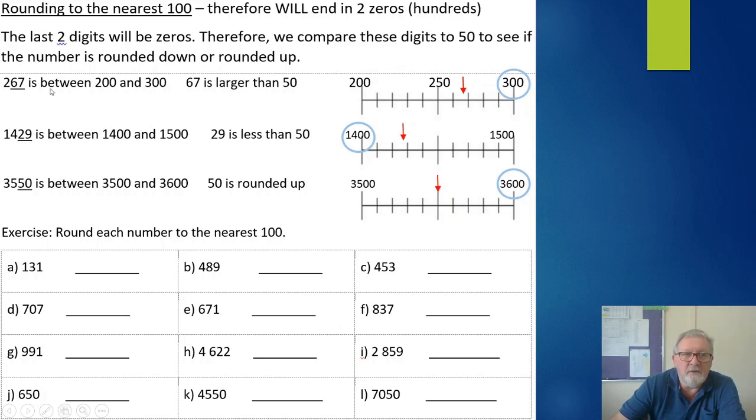So 267 is our first example and it's between 200 and 300. It's easier to see that it's bigger than 200 but it hasn't yet reached 300. So I've underlined the 67 because that's what I need to look at, and I compare that to 50. 67 is larger than 50 - that's approximately where it would fall on this number line. You can clearly see it's closer to 300.